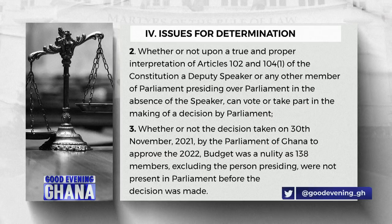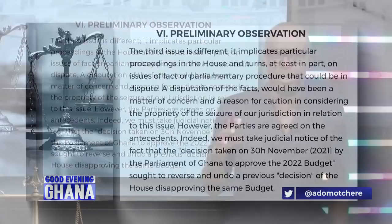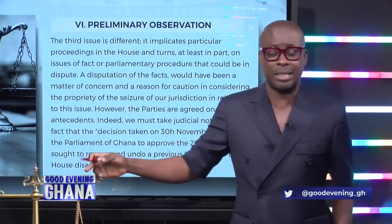Issue number three: whether the decision taken on 30th November 2021 by the parliament of Ghana to approve the 2022 budget was a nullity, as 138 members excluding the person presiding were not present in parliament before the decision was made. So we now know the issues: whether the speaker can be counted, whether the deputy speaker can be counted, whether he can vote, and whether the decision on the budget was valid or not.